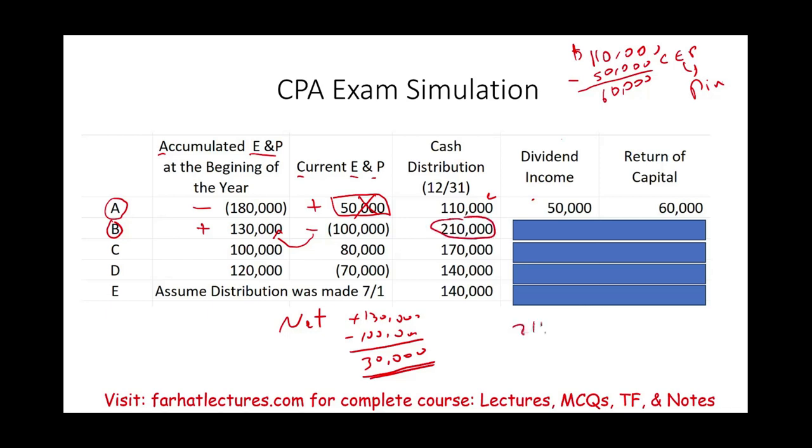Therefore, if we distribute $210,000, $30,000 of it will be dividend. And the remainder, it's not dividend. What is it? It's return of capital. Therefore, $30,000 is dividend, which is taxable to the shareholder, $180,000 return of capital.